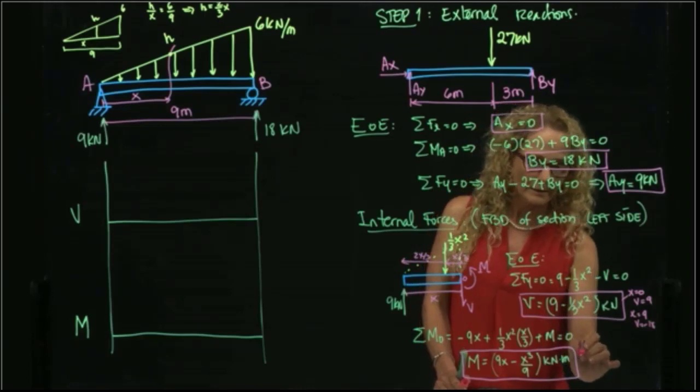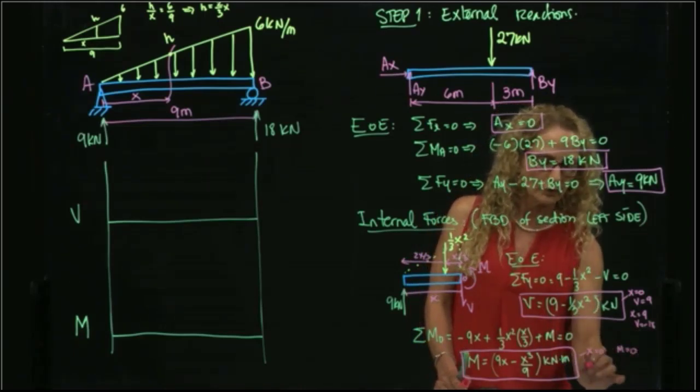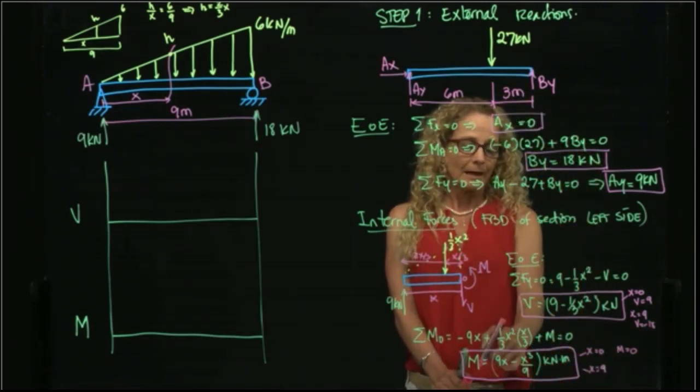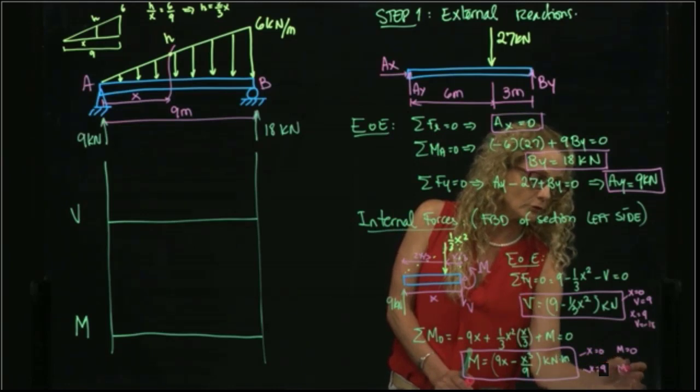I can evaluate: for X equals 0, the moment is equal to 0. And for X equals 9, I have 9 times 9 minus 81. And here I have 9 cubed over 9, which is 81. So it's also 0.